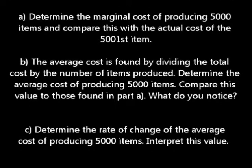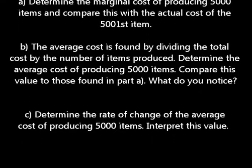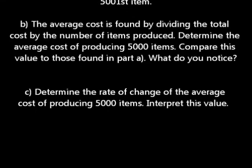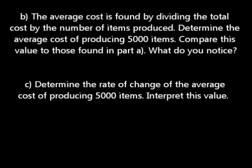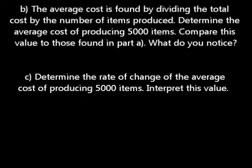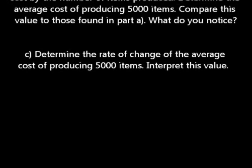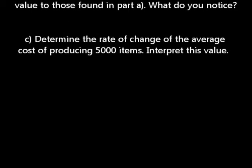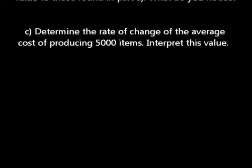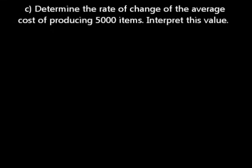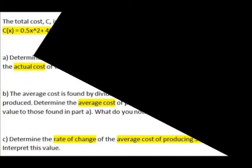Part B: the average cost is found by dividing the total cost by the number of items produced. Determine the average cost of producing 5,000 items. Compare this value to those found in Part A — what do you notice? Part C: determine the rate of change of the average cost of producing 5,000 items and interpret this value.